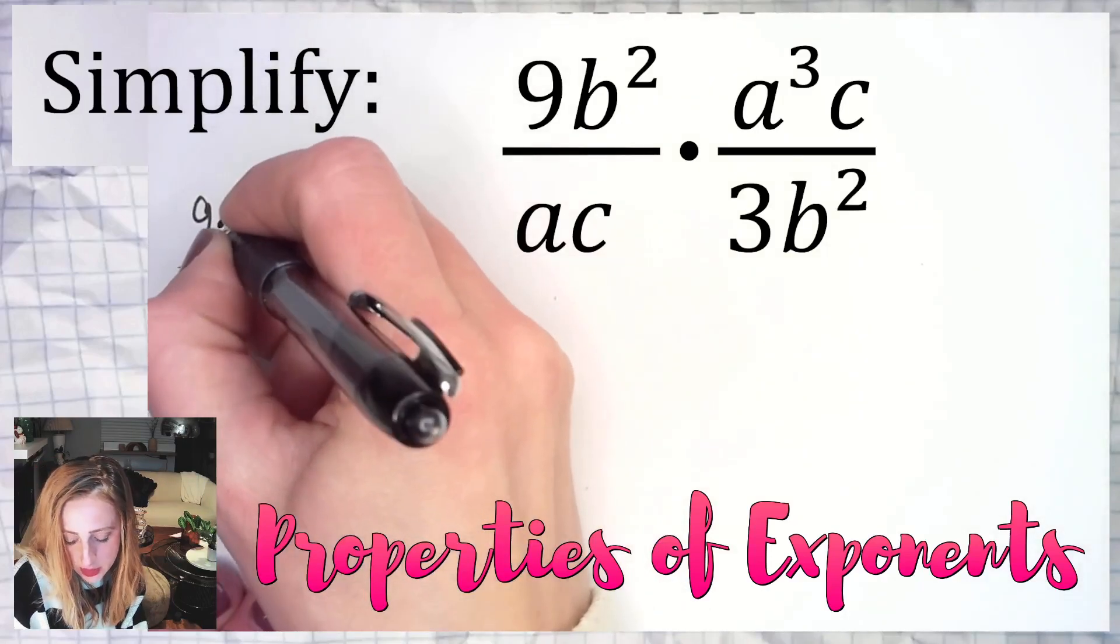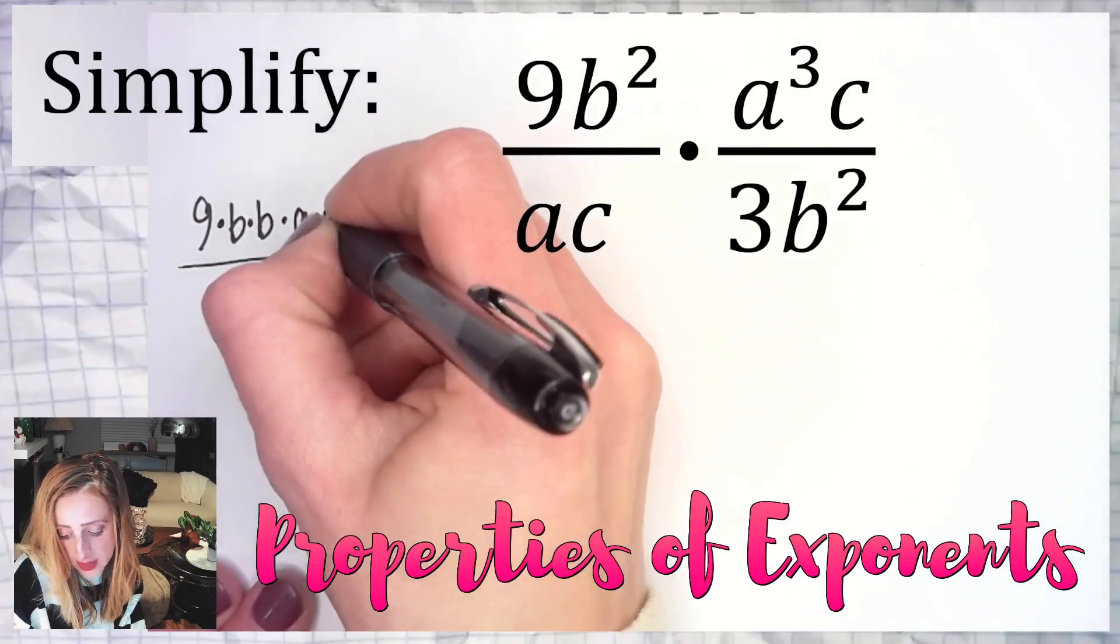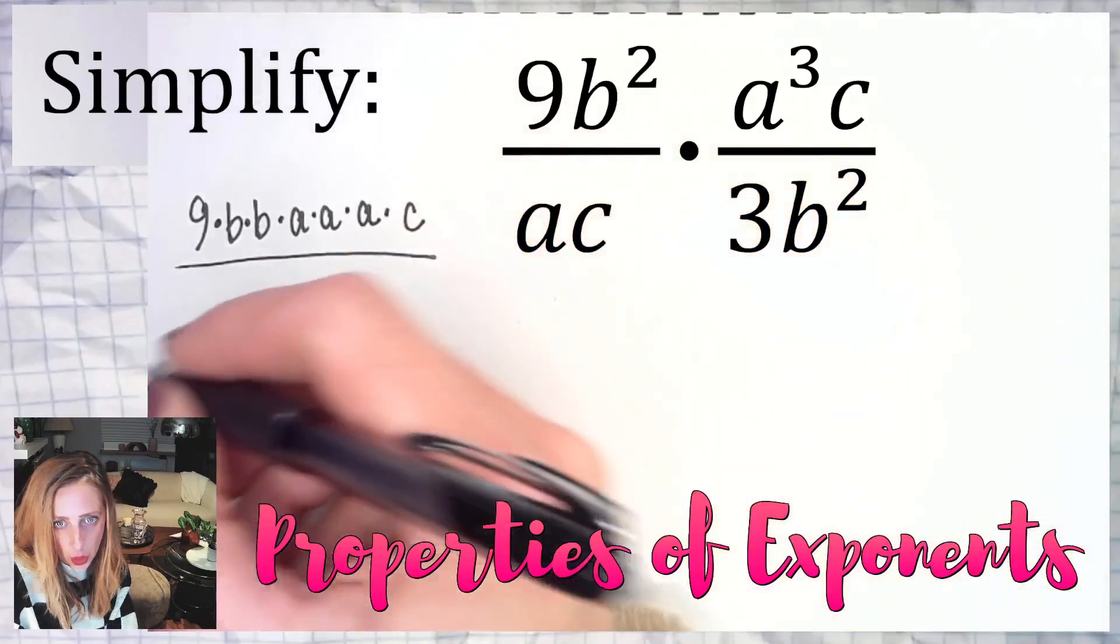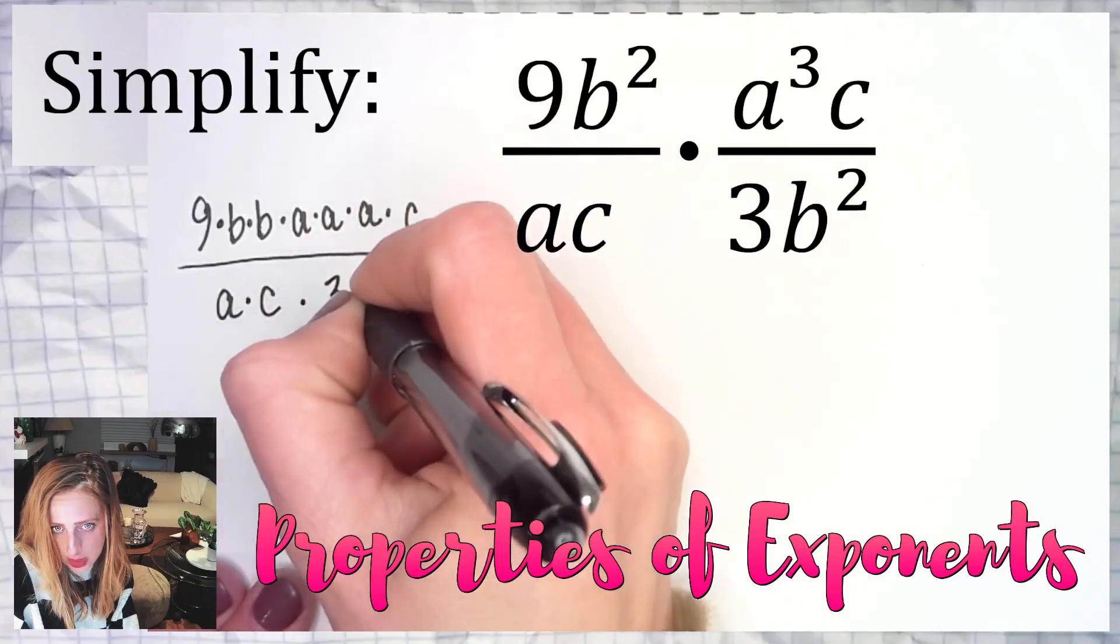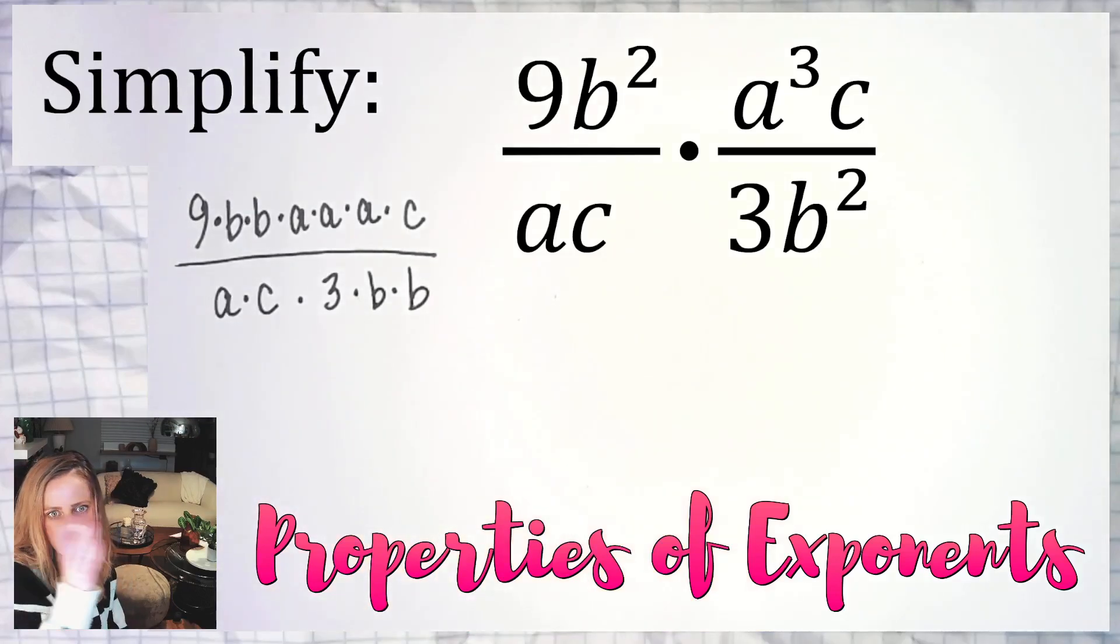So it's 9, b squared is really b times b, times a cubed which is a times a times a, times c which is c to the first, over a times c times 3 times b times b. Do I need all those dots in between each part? No, that's absolutely not necessary. You could just write them out but for now we put them there.